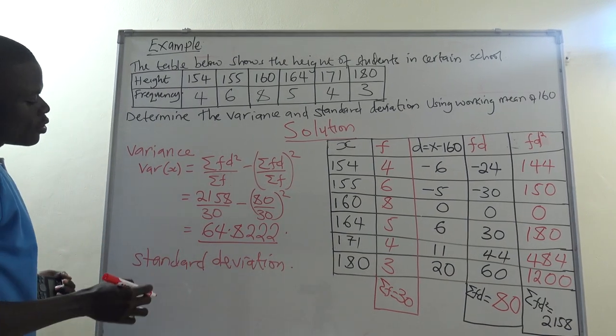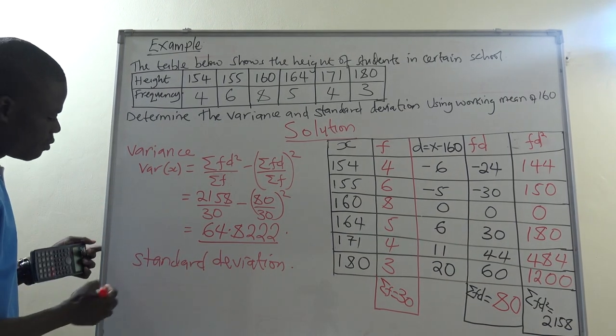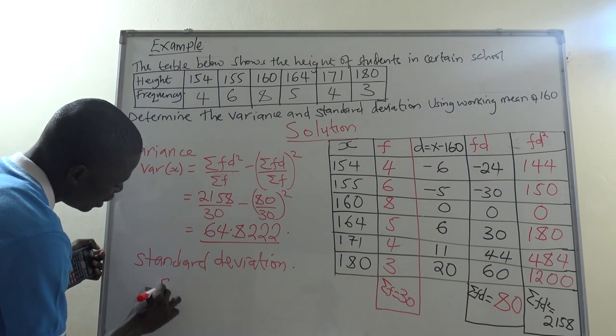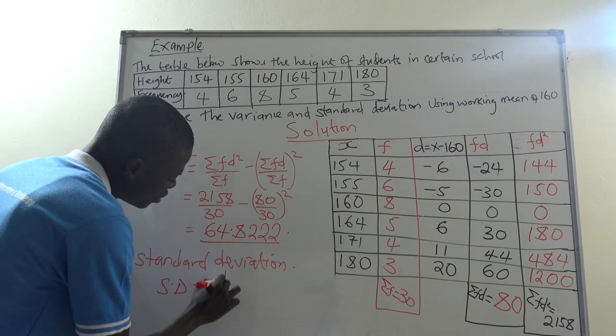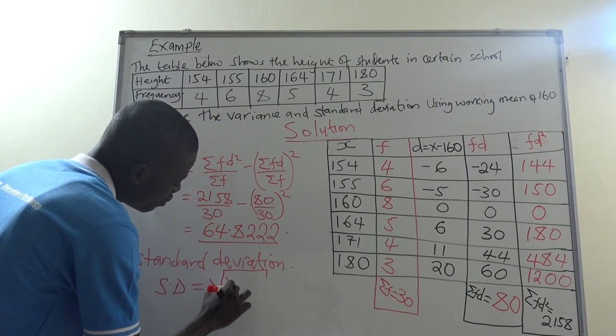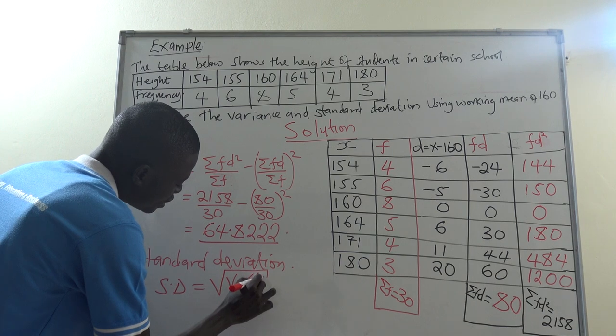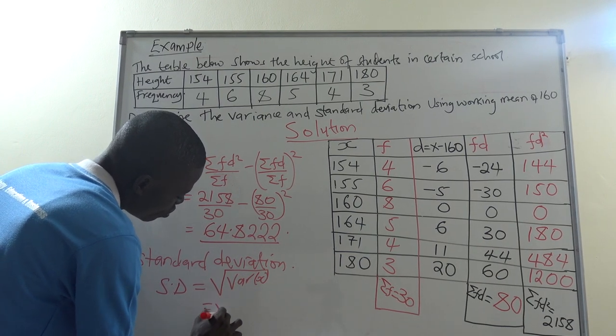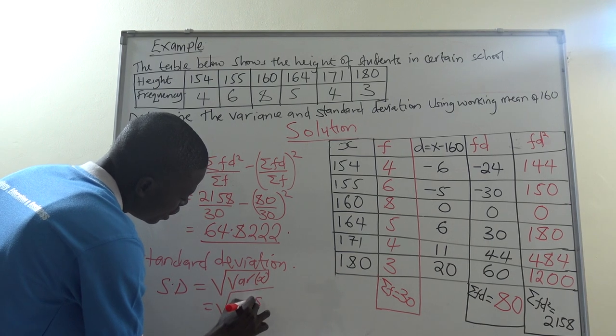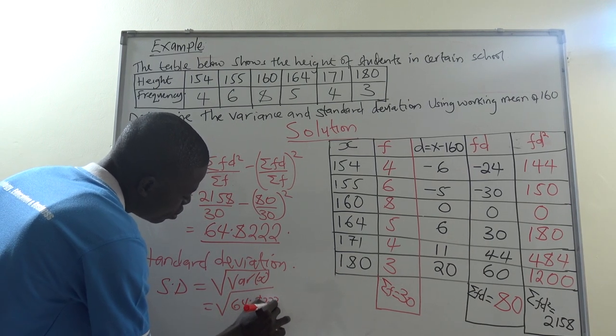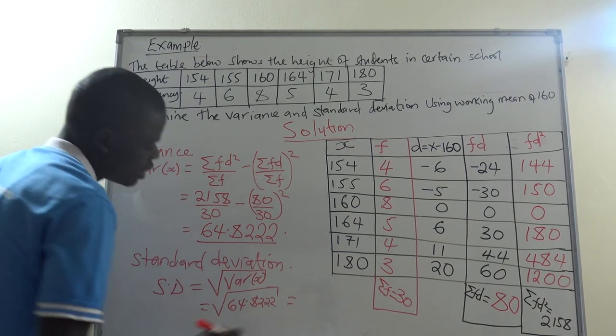So standard deviation is denoted by SD and given by square root of Var(X), which is square root of 64.8222. This one is equal to